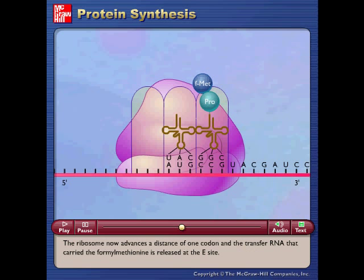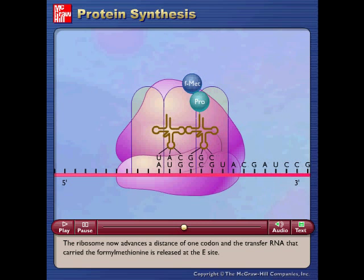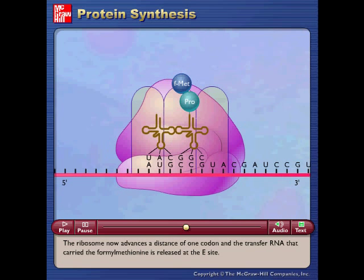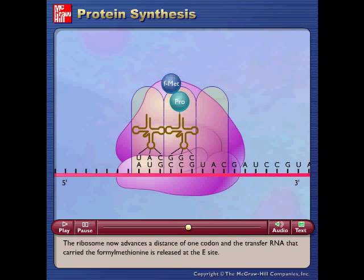The ribosome now advances a distance of one codon, and the transfer RNA that carried the formyl-methionine is released at the E-site.